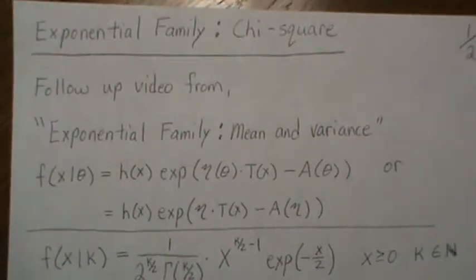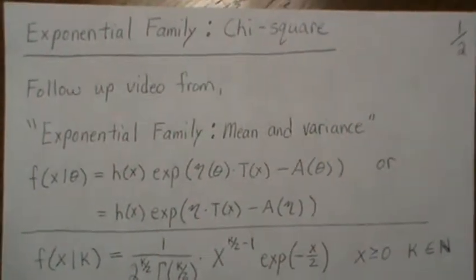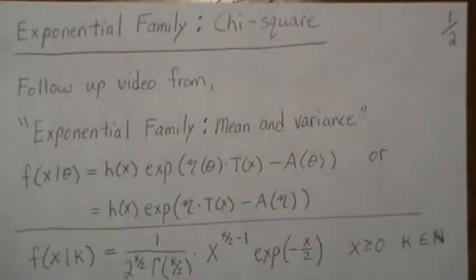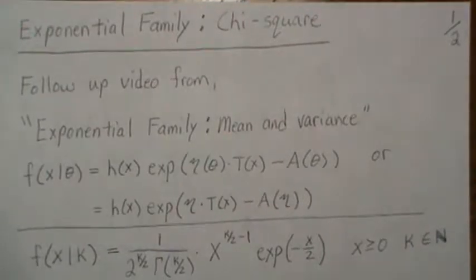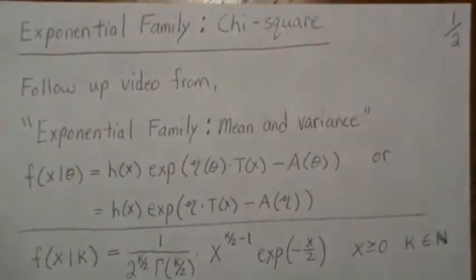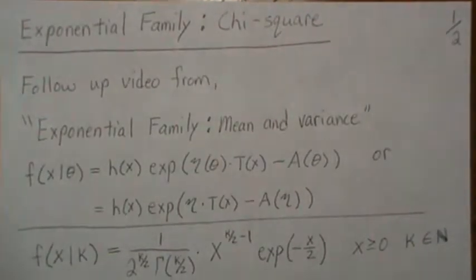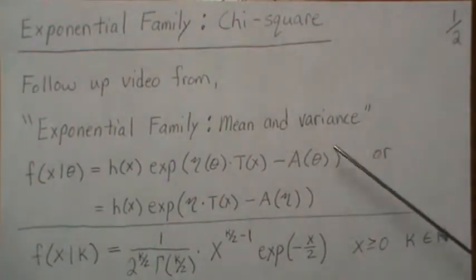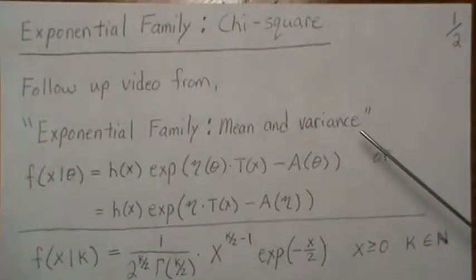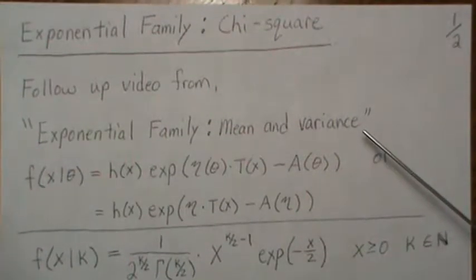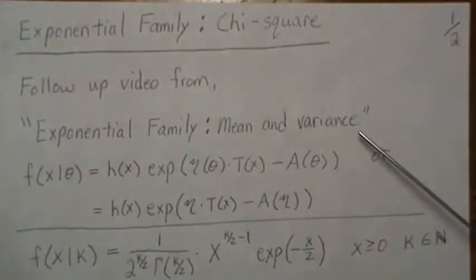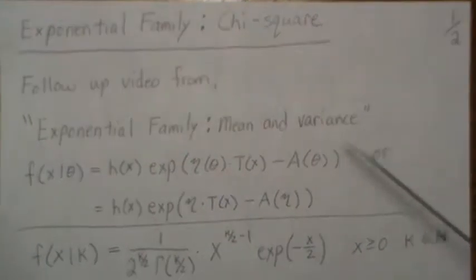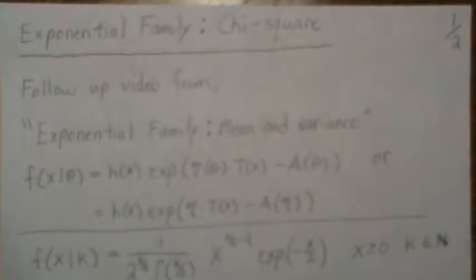Hello. In this video we're going to look at the exponential family, specifically the chi-squared distribution within the exponential family. This is a follow-up video from a video I did on finding the mean and the variance generically from an exponential family.